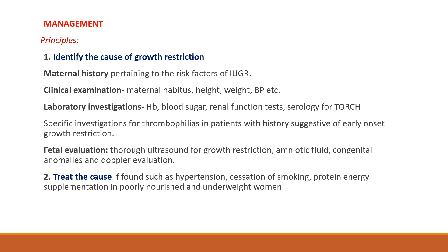The management of IUGR is based on three principles: identifying the cause of growth restriction, treating the cause if possible, and general management. Identifying the cause involves maternal history, clinical examination, and laboratory investigations including hemoglobin, blood sugar, renal function tests, serology for TORCH infections, and specific investigations for thrombophilia in patients with early onset growth restriction. Fetal evaluation includes thorough ultrasound assessment for growth parameters, liquor volume, congenital anomalies, and Doppler evaluation.